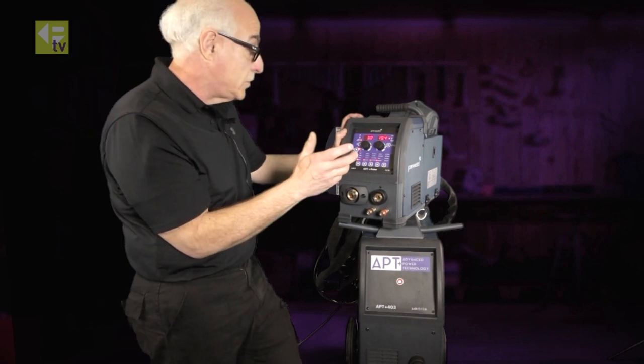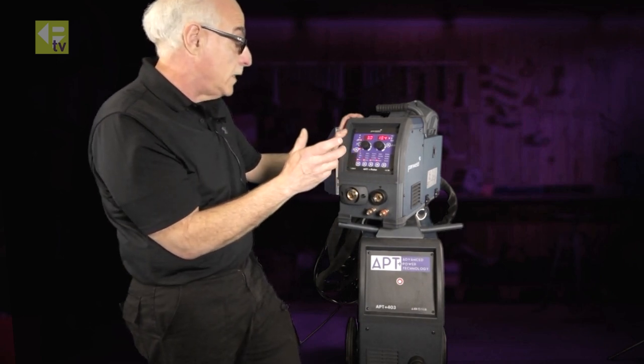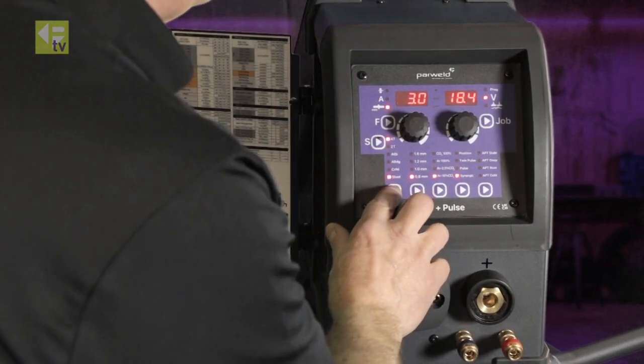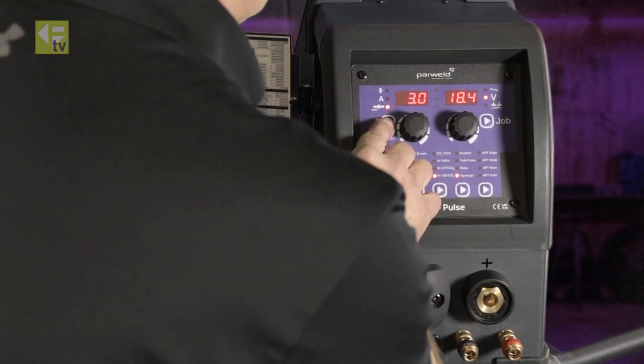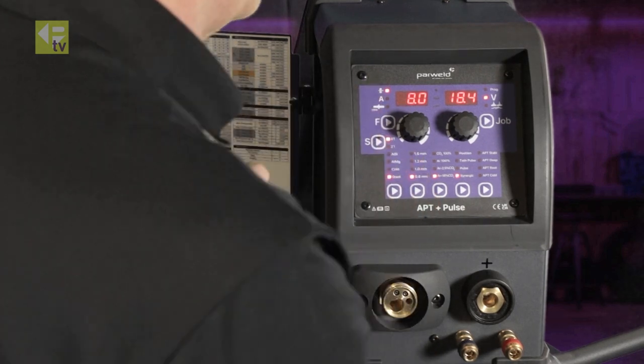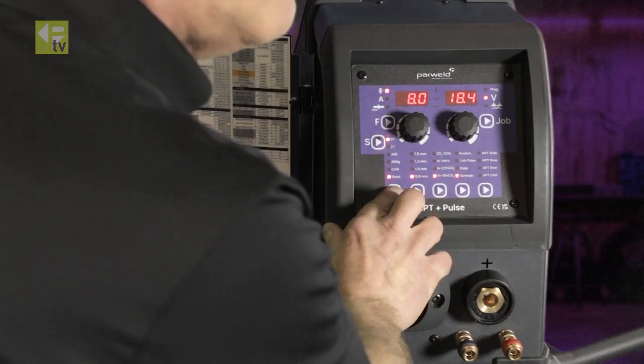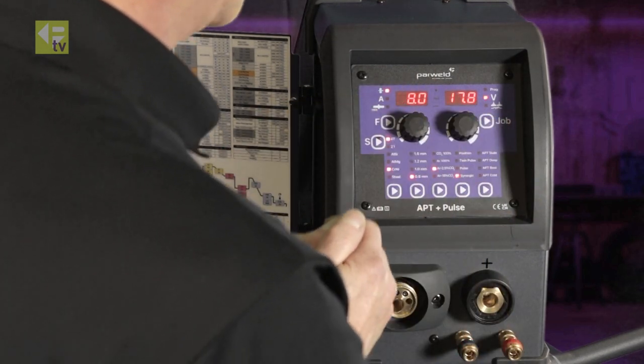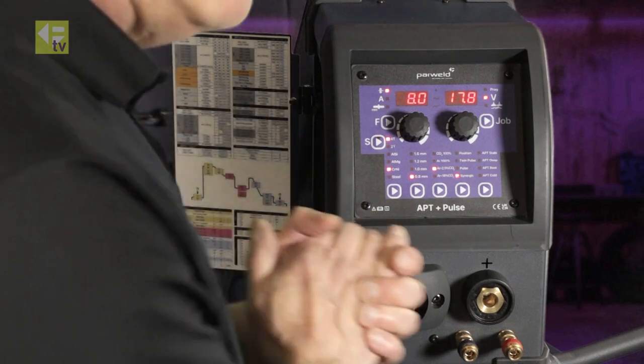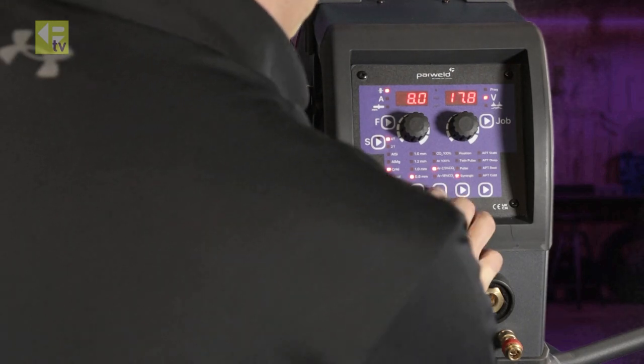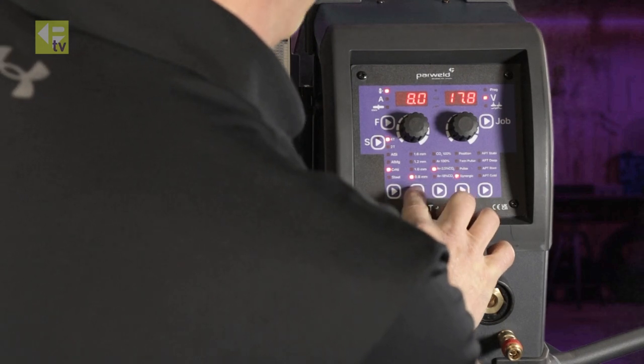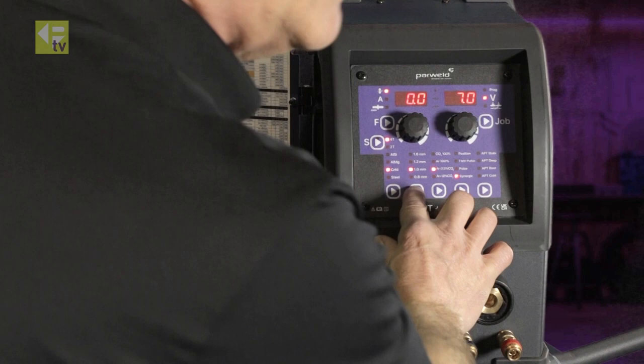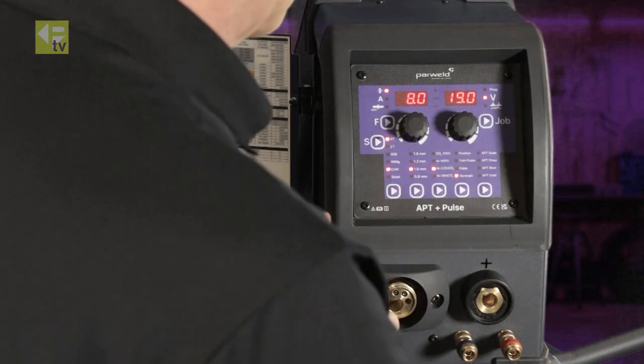So as an example, we'll say we want to try and weld with some stainless steel one millimeter. So we're going to keep on wire feed speed. I'm going to go to stainless steel. It comes up with a job program there straight away which is highlighted in the main menu. I'm going to select my gas which is already selected for me, but I'm going to also select my welding wire which is one millimeter. I've got my gas selected.